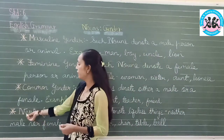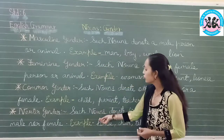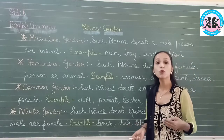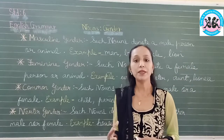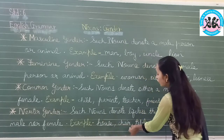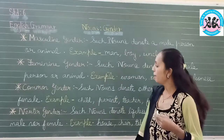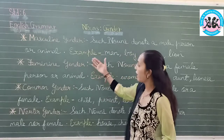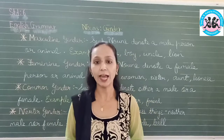And the last kind of gender is neuter gender. Such nouns denote lifeless things — things without life, neither male nor female. Examples: house, chair, table, ball. Things without life come in the category of neuter gender. So in all, we have four kinds of gender: masculine, feminine, common, and neuter.